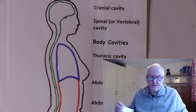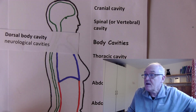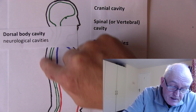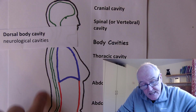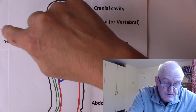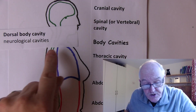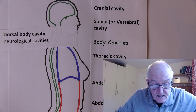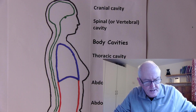These are sometimes described as the dorsal body cavities. The dorsal surface is at the back and the ventral surface is at the front — alternatively called posterior and anterior. They are also called the neurological cavities, because the brain and spinal cord are the neurological tissues.